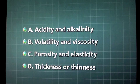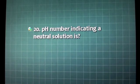pH scale ranges from 0 to 14 and indicates the products: A. Acidity and alkalinity, B. Volatility and viscosity, C. Porosity and elasticity, D. Thickness or thinness.